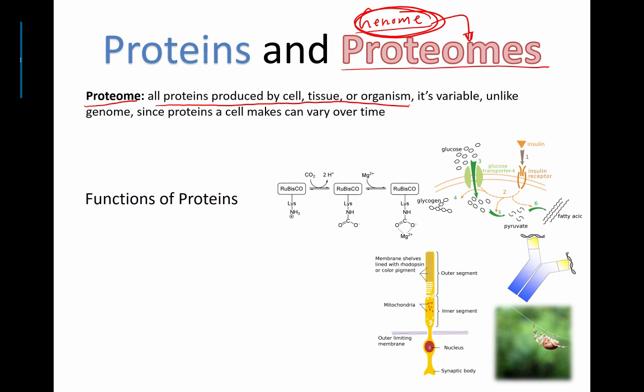And that's one of the things that, for example, creates a difference between your immune system and my immune system. One of the reasons the proteome is variable is because the proteins a cell makes can vary over time. The genome you pretty much are given when you are born — you inherit your genome. But the proteins that your body and each of your cells is actually making can get changed and regulated over time.